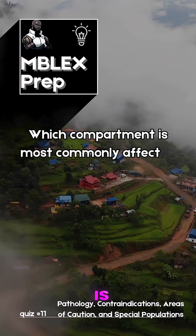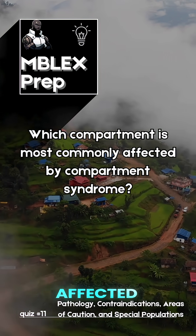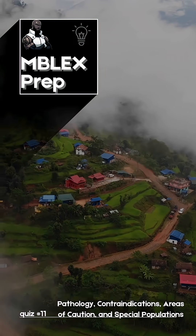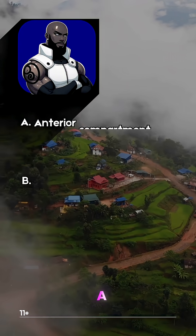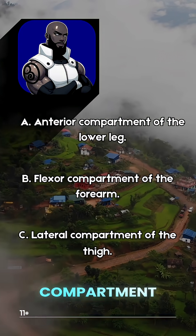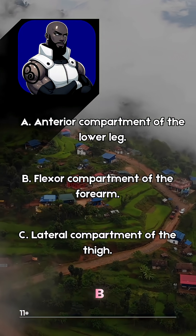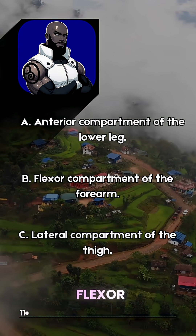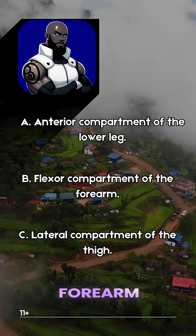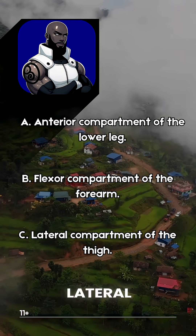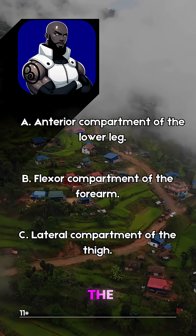Which compartment is most commonly affected by compartment syndrome? A. Anterior compartment of the lower leg. B. Flexor compartment of the forearm. C. Lateral compartment of the thigh.